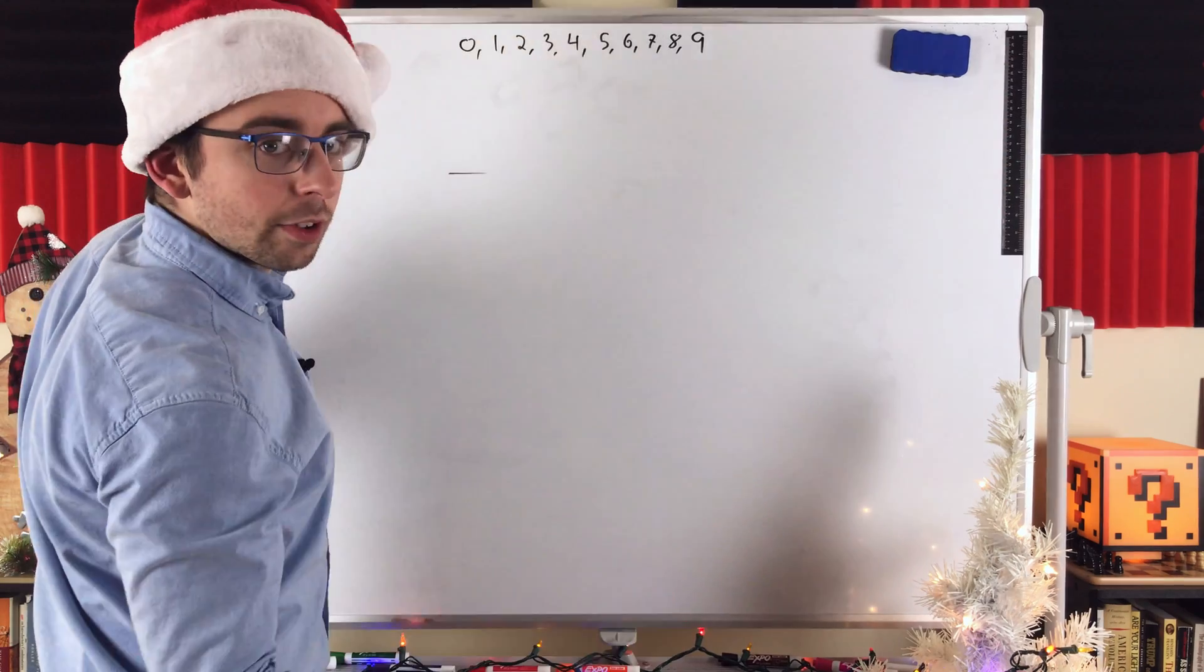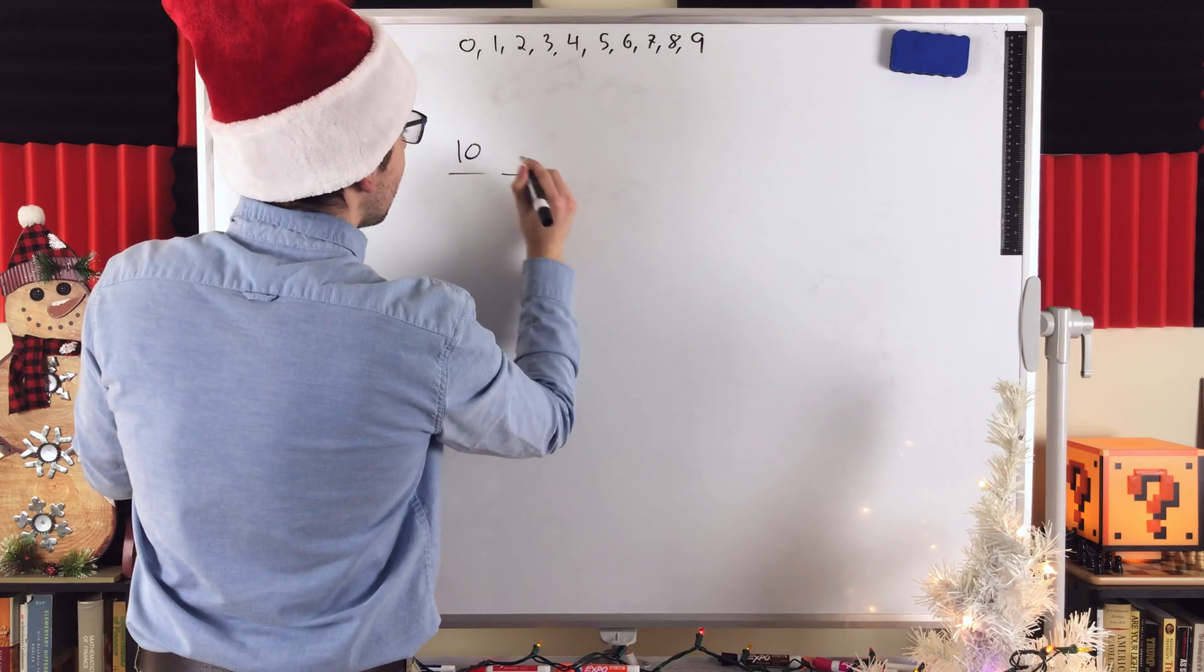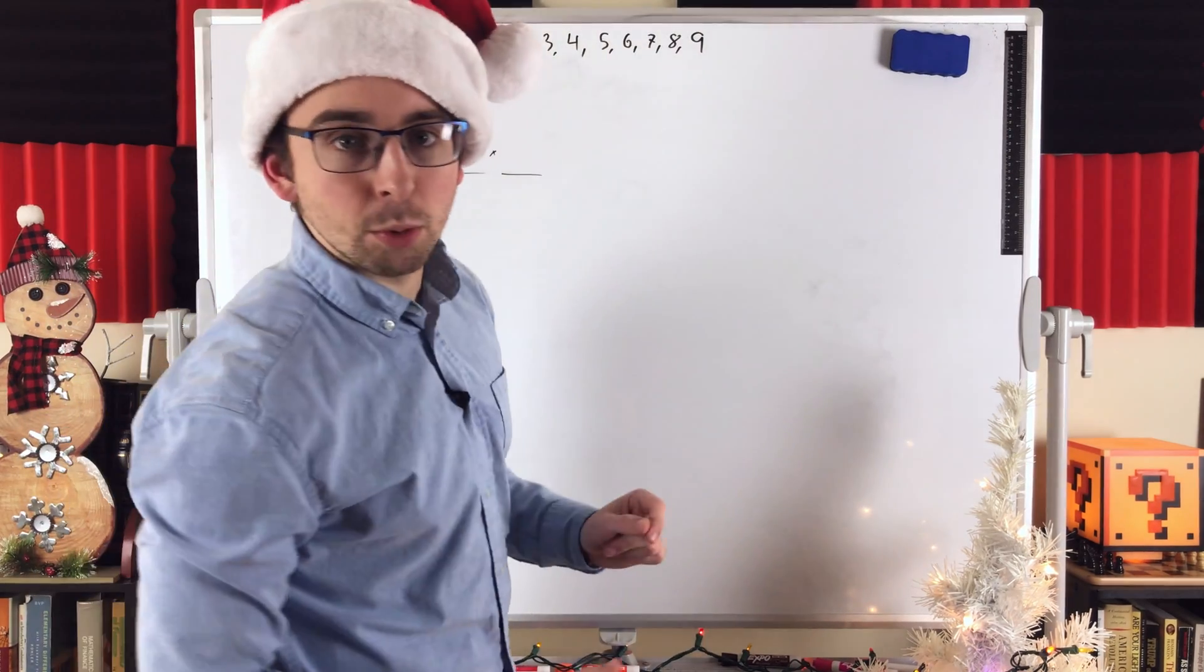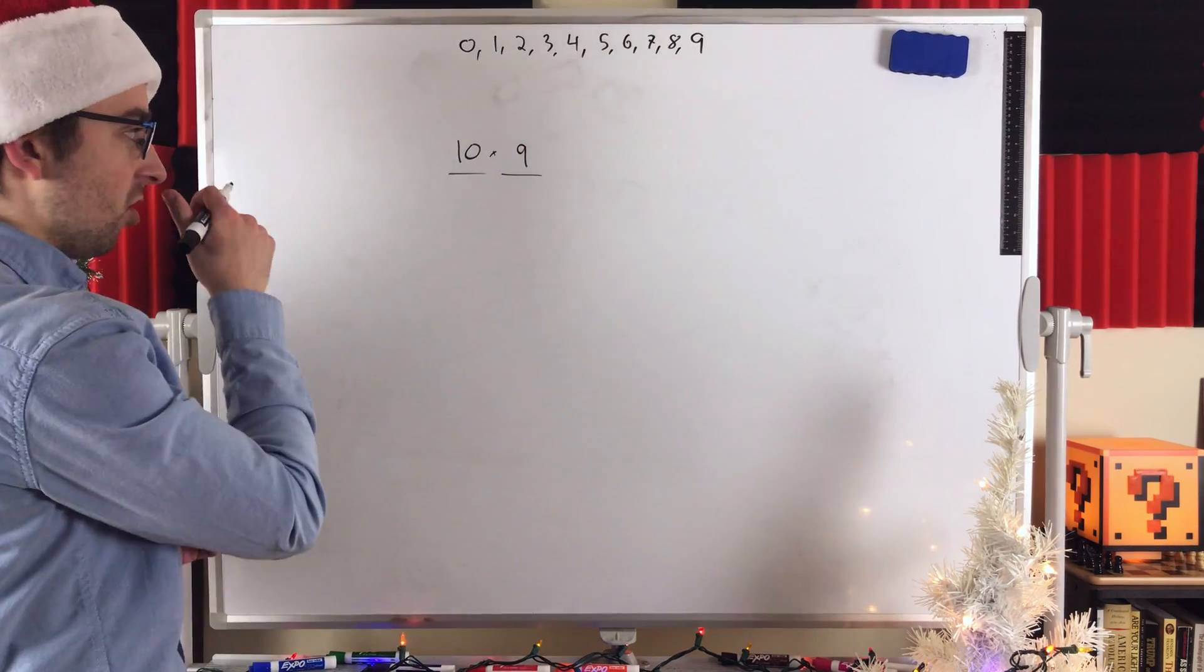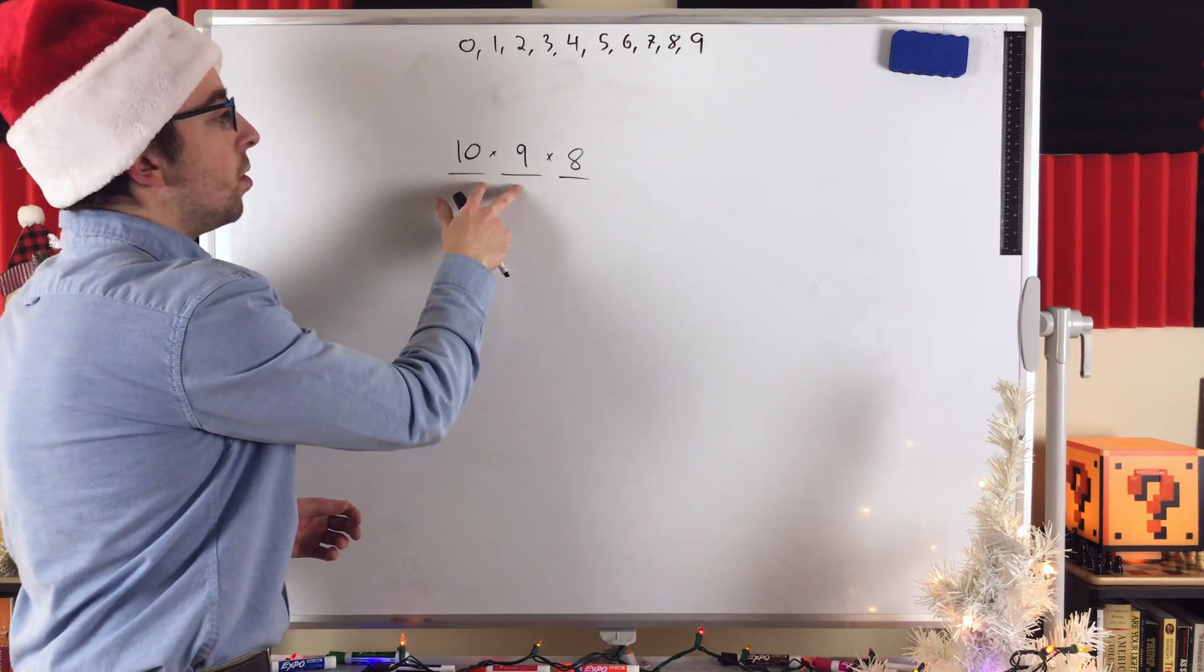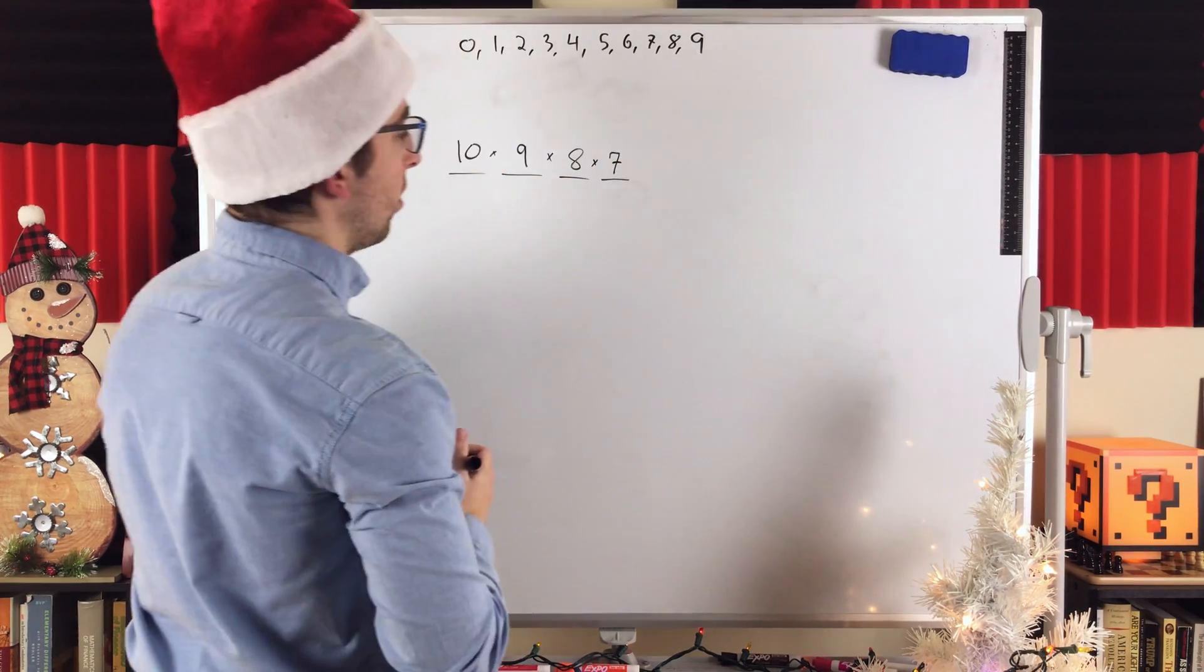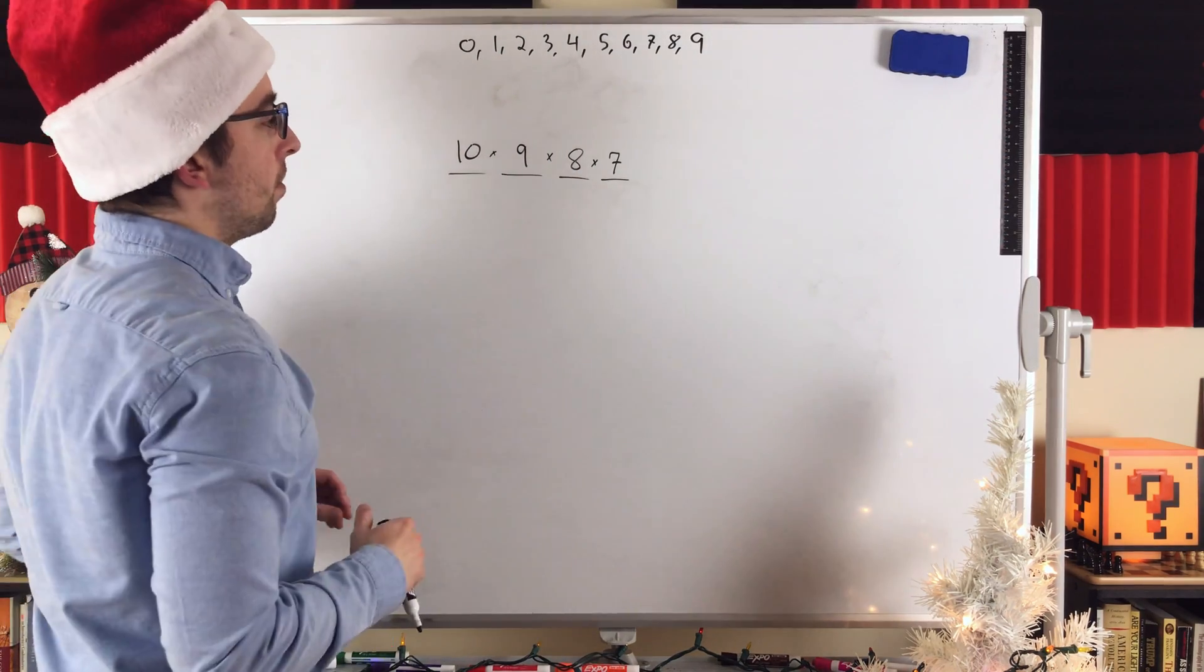Some digit has to go first in our code. And there are 10 possibilities. We could put any digit first. But things get a little different for the second number in our code. We no longer have 10 options because whatever digit went first, we can't use it again because we're not allowing repetition. So now there are only 9 possibilities for the second digit. Then for the third digit, there are now 8 possibilities left because we can't use either of the 2 digits that were in these first 2 spots. And then for the last number in our code, we've only got 7 digits left to choose from. And so this totals up to, let's see, 10 times 9 is 90, 90 times 8 is 720,